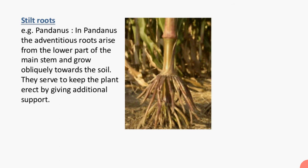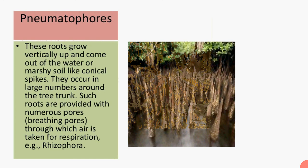Stilt roots also arise from the lower part of the main stem and grow vertically towards the soil, generally from the nodes — as also seen in sugarcane. Pneumatophores are roots that grow vertically upward and come out of water or marshy soil like conical spikes. They occur in large numbers around the tree trunk and are provided with numerous pores — also known as breathing pores — from which air is taken for respiration.